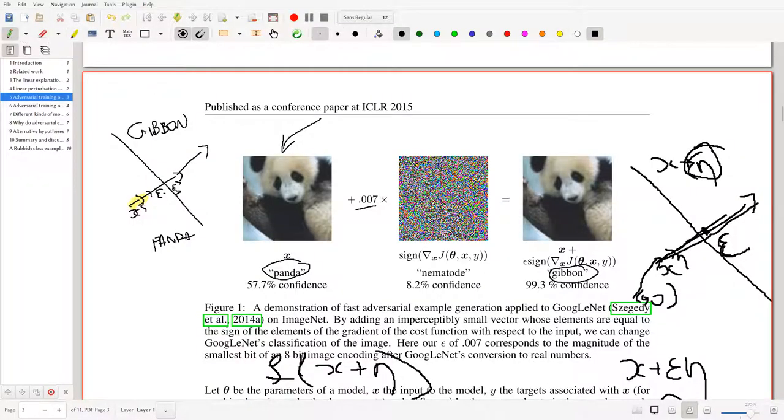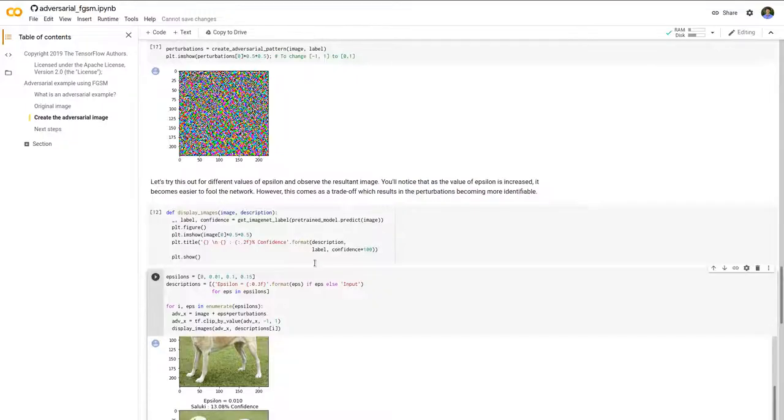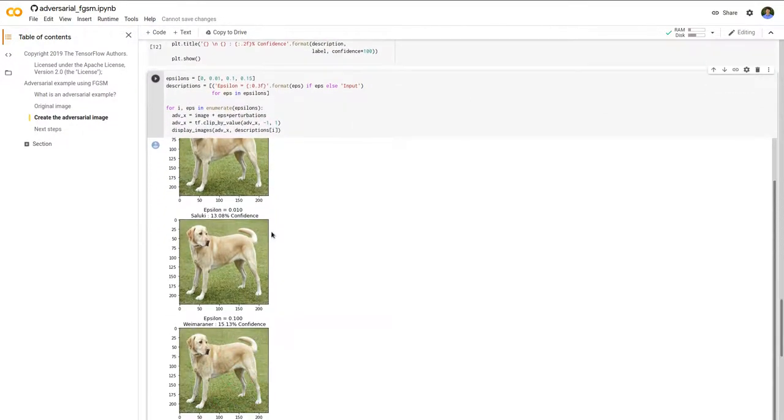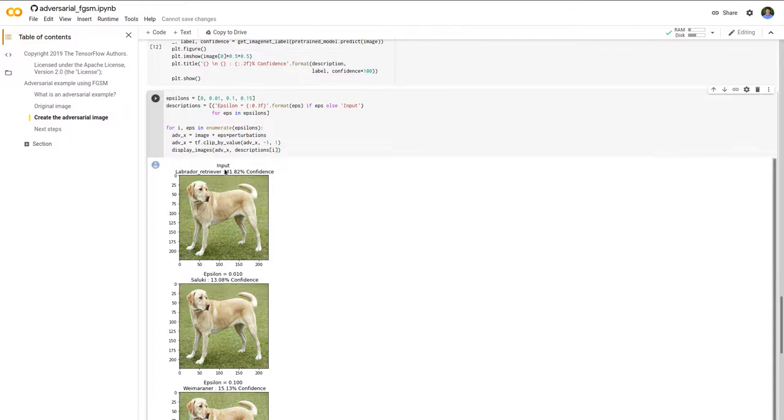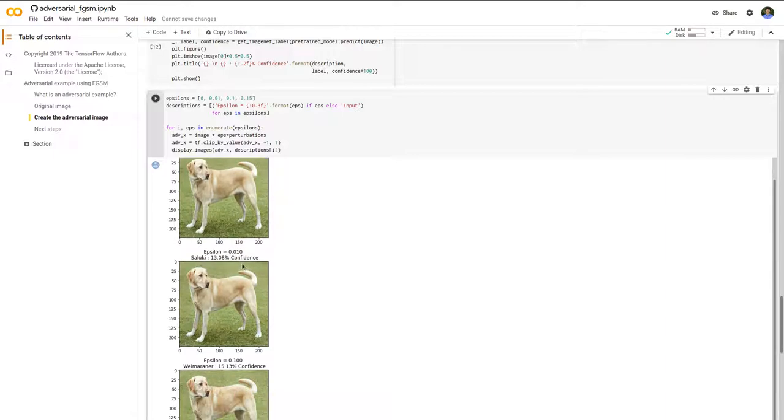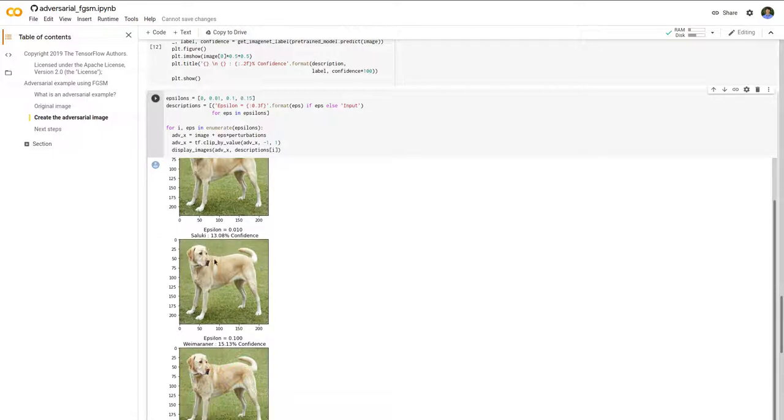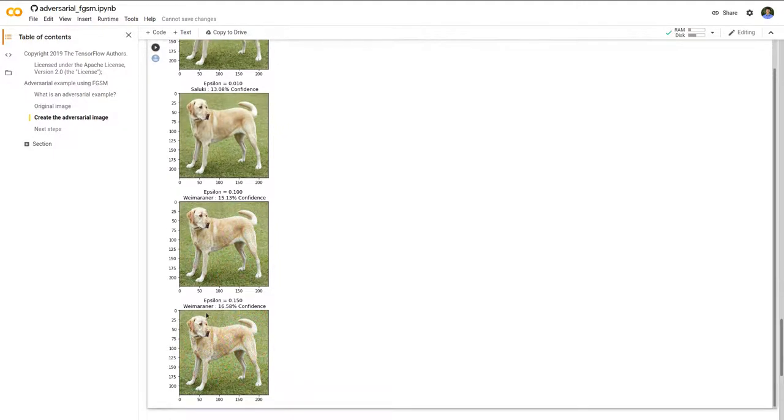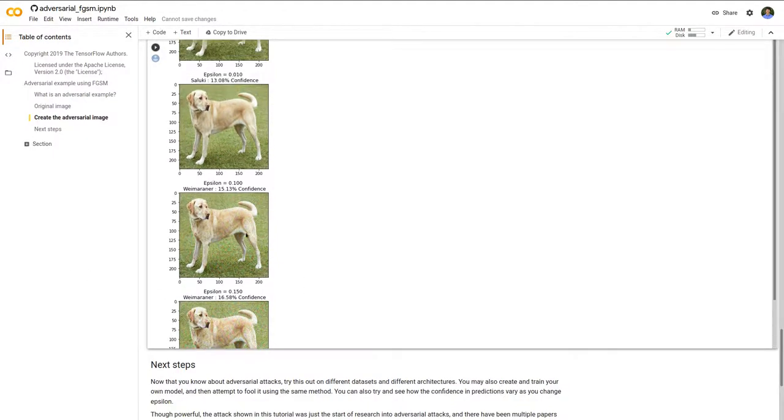Pretty much here what we're doing is taking this vector addition and then looking at what it classifies. We have the initial Labrador image without any perturbations at 42 percent confidence. Then with a small epsilon of 0.01 we get a Saluki, which is the wrong classification. I don't even know what a Saluki is, but you get that.